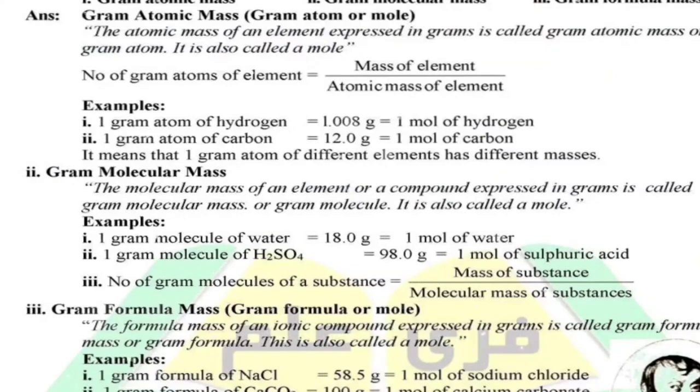What does one gram atom of hydrogen mean? We take the C12 atom and take its 12th part and call it one amu. So one amu is equal to one gram atom of hydrogen, and one gram of hydrogen is equal to 1.008 grams of hydrogen.